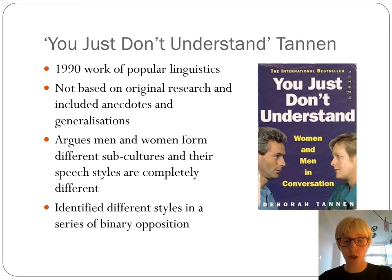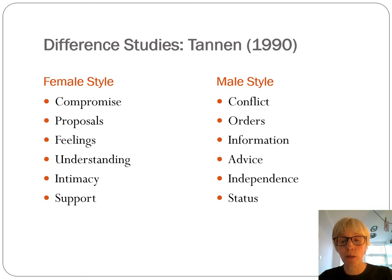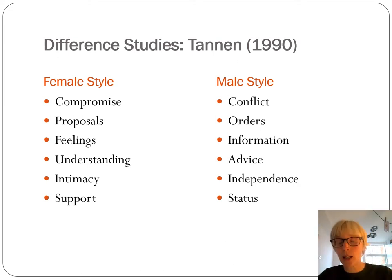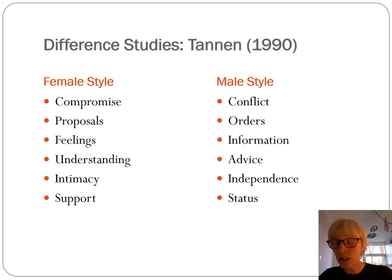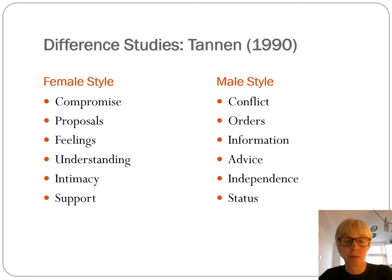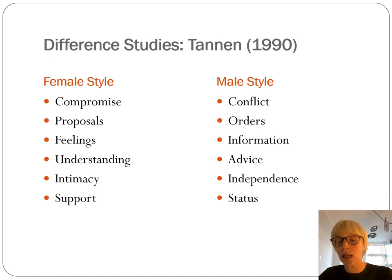Deborah Tannen identified different styles in a series of binary oppositions. This is what she calls the female style and the male style, and they are the opposite of each other. In conversation, the female style is to seek compromise, but the male style is to be happy with conflict or possibly even to seek conflict. She says the female style is to offer proposals, often starting with 'let's' or asking a question like 'shall we?', whereas the male style is to give an order. The female style is often to talk about feelings, whereas in male-style conversation there will be lots of information exchange — factual content.